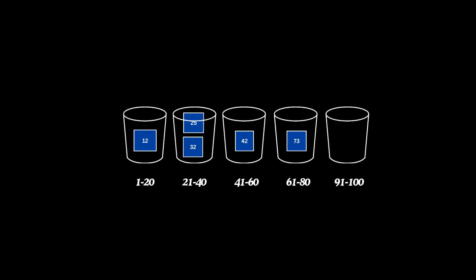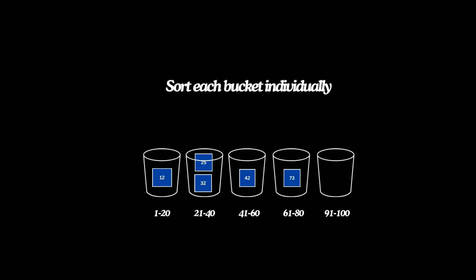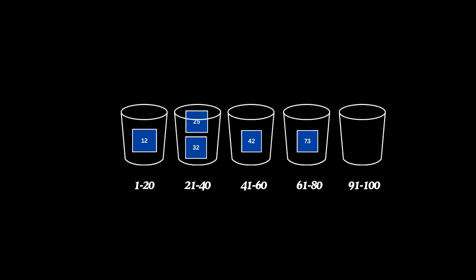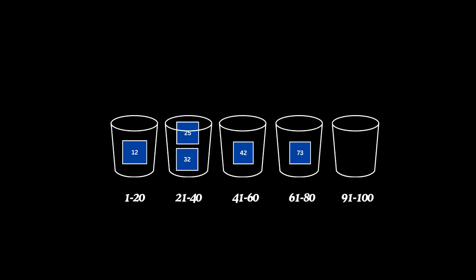After this, sort each bucket individually. Bucket 1 becomes 12, bucket 2 becomes 25, 32, and the others are already sorted.